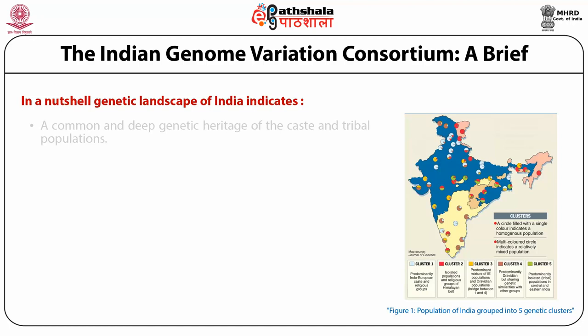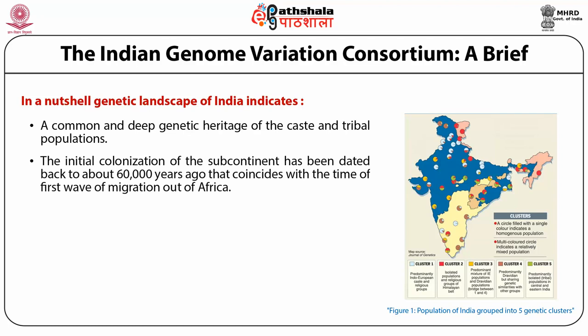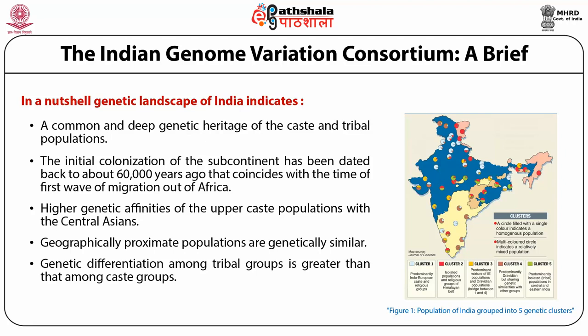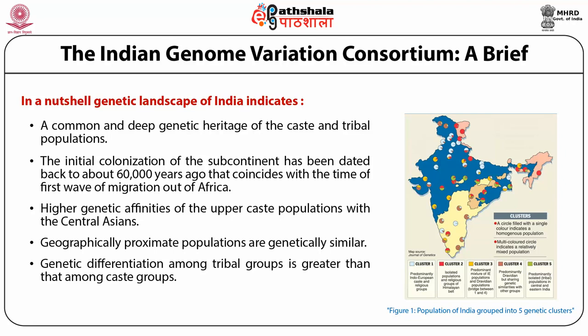In a nutshell, the genetic landscape of India indicates a common and deep genetic heritage of the caste and tribal populations. The initial colonization of the subcontinent has been dated to about 60,000 years ago, coinciding with the time of the first wave of migration out of Africa. Upper caste populations show higher genetic affinities with Central Asians. Geographically proximate populations tend to be genetically similar. Genetic differentiation among tribal groups is greater than among caste groups, and Austro-Asiatic speaking tribal groups might be the earliest inhabitants of India.